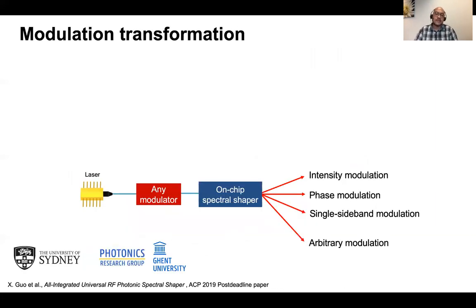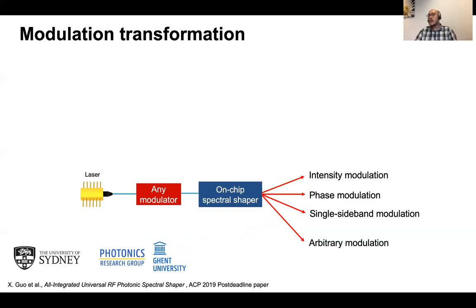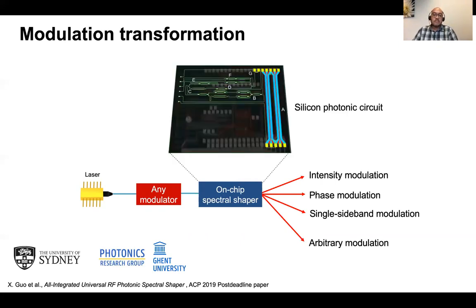Starting with modulation transformation: the idea is to have any kind of modulator at the input connected to an on-chip spectral shaper that synthesizes any kind of modulation at the output, free from the input modulation. For example, if you have phase modulation you can transform it to intensity modulation, remove one sideband to create single sideband modulation, or synthesize a spectrum with arbitrary phase and amplitude relation between the optical carrier and the sidebands. This work was presented in collaboration between my group, the University of Sydney, and the photonics research group at the University of Sydney.